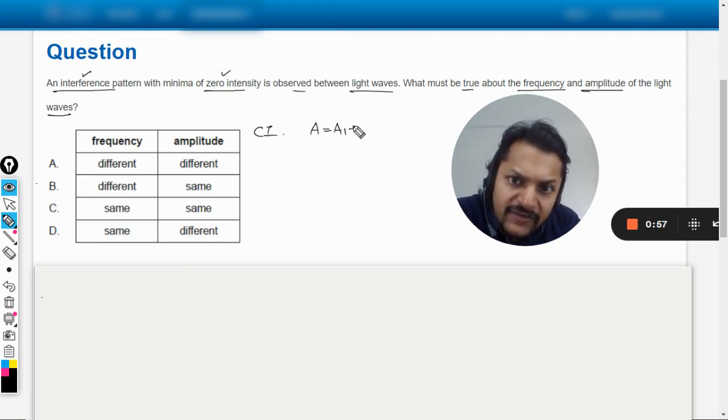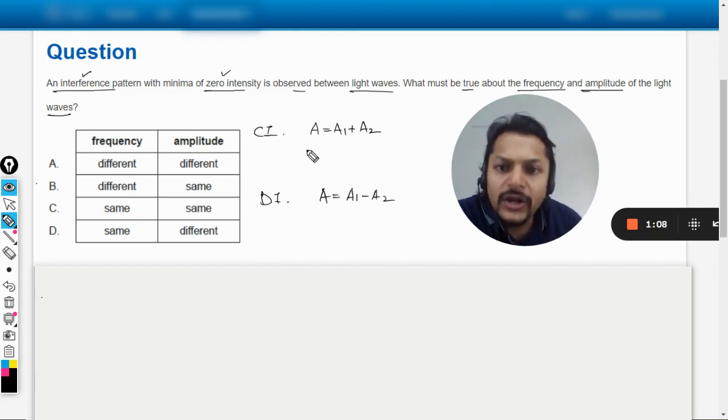First of all, understand that in constructive interference, the resulting amplitude becomes A₁ plus A₂. And in destructive interference, the resulting amplitude will become A₁ minus A₂. Accordingly you can find the intensity because intensity is directly proportional to square of A.